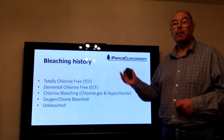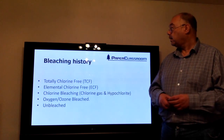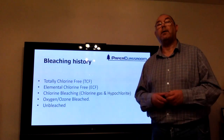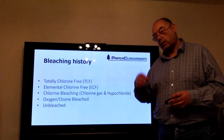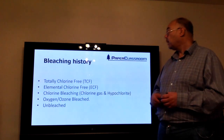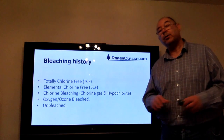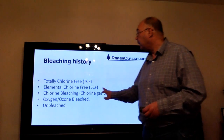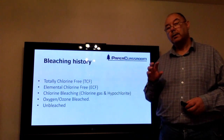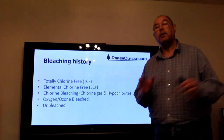You might decide to market your pulp by its bleaching history. At one time, nearly all pulps were bleached using chlorine, but we eventually found out that's very dangerous because chlorine can interact with lignin and produce dioxins and other nasty chemicals. Now we have pulps that are TCF — totally chlorine free — so they don't use chlorine in the bleaching process at all. There are also pulps that are ECF — elemental chlorine free — where some chemical compounds contain chlorine, but not in a form that can interact with lignin to form dioxin.